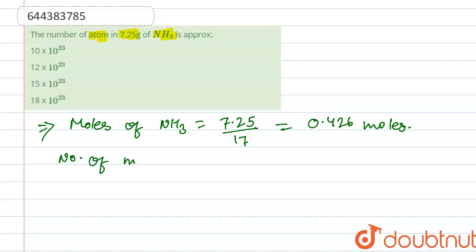Number of molecules, which is equal to 0.426 into Avogadro's number, that is 6.02 times 10 to the power 23 molecules.